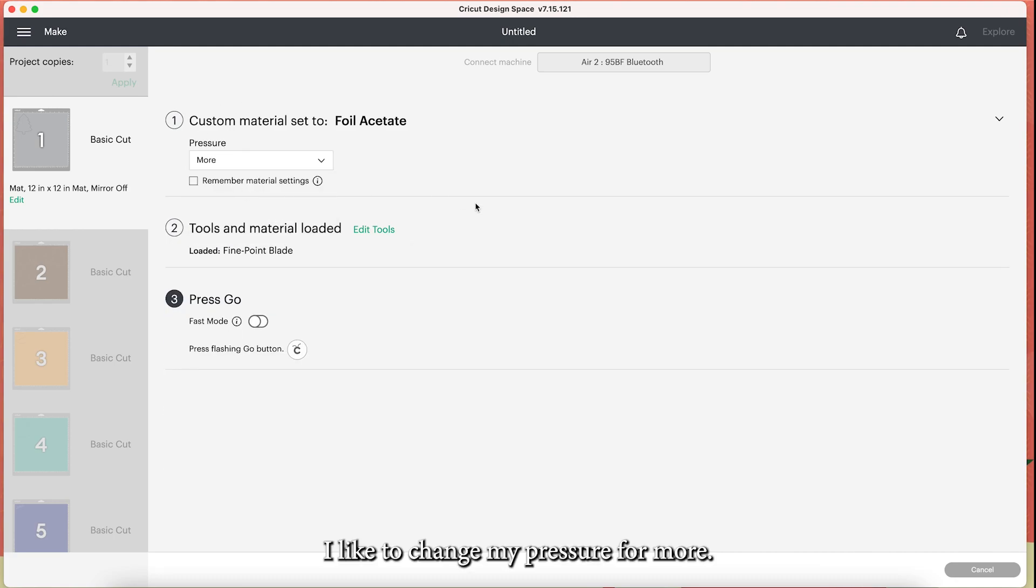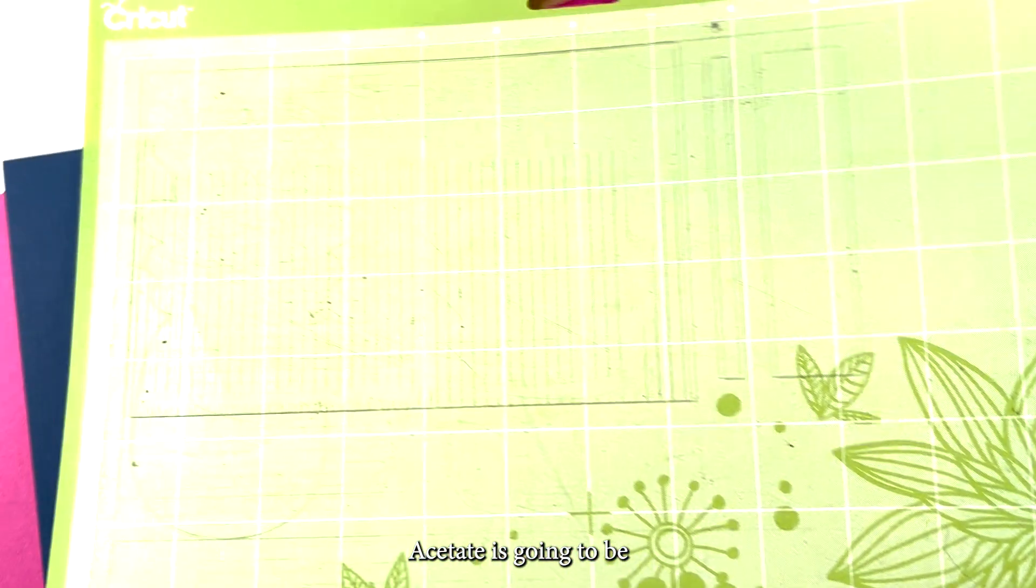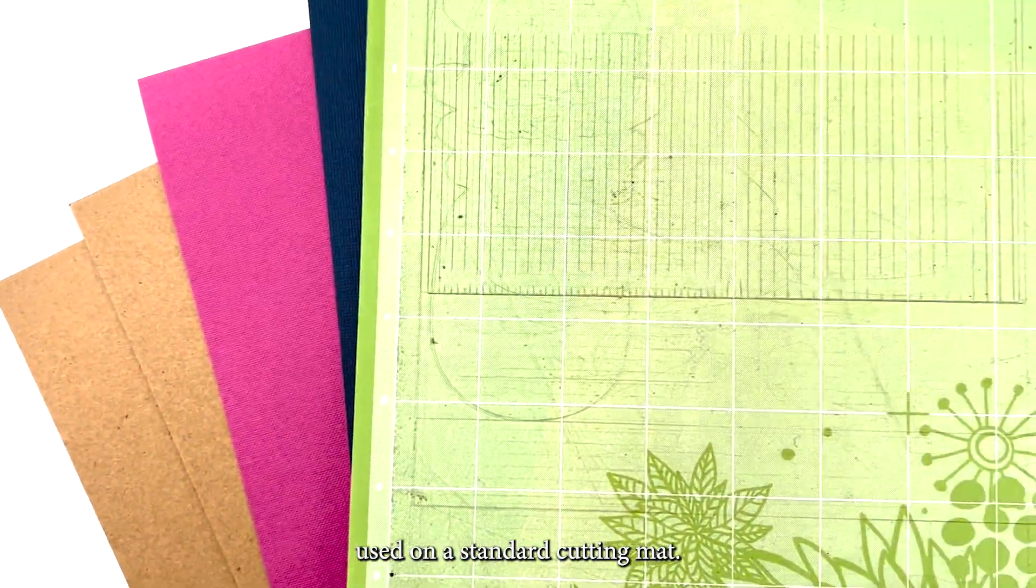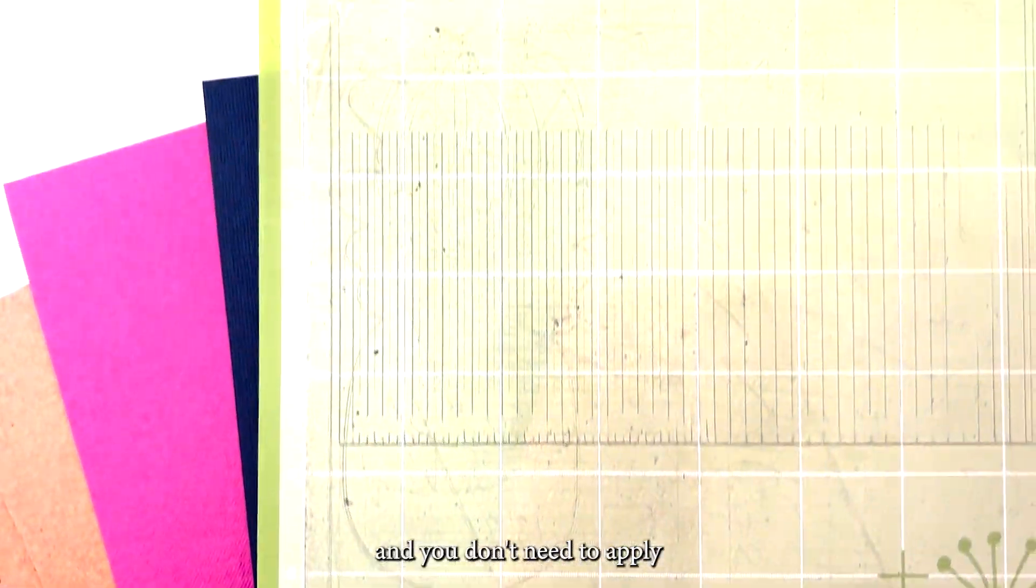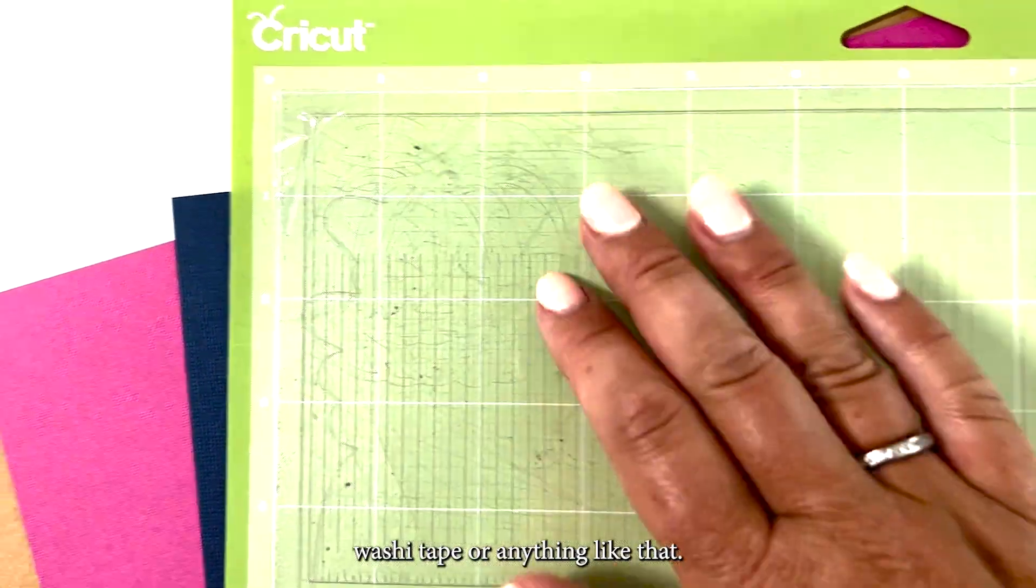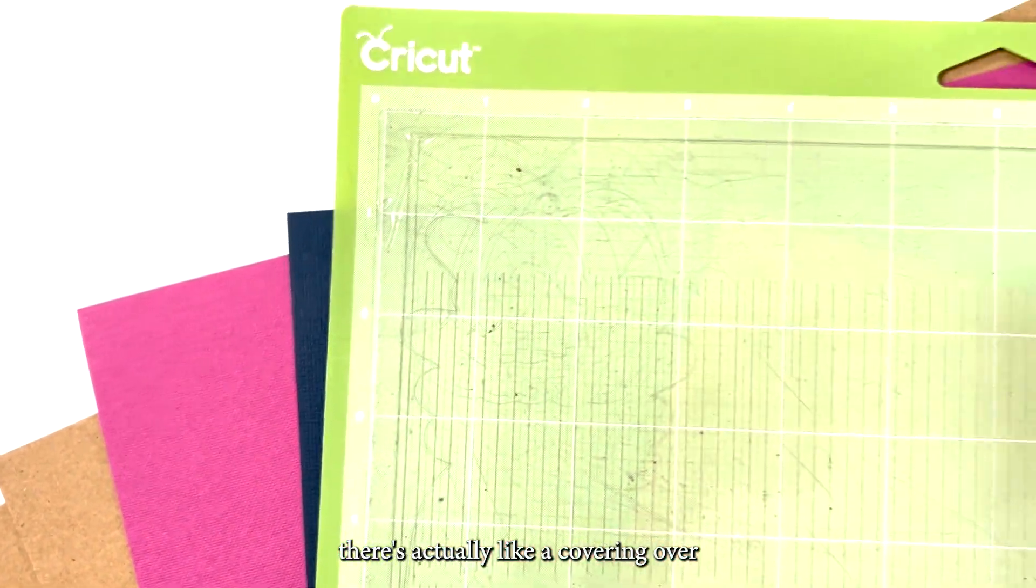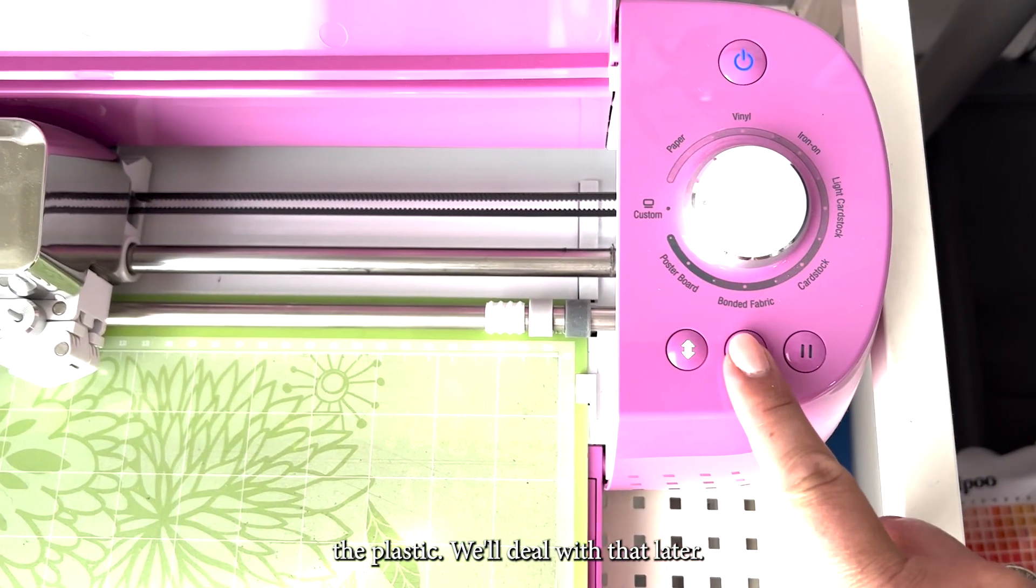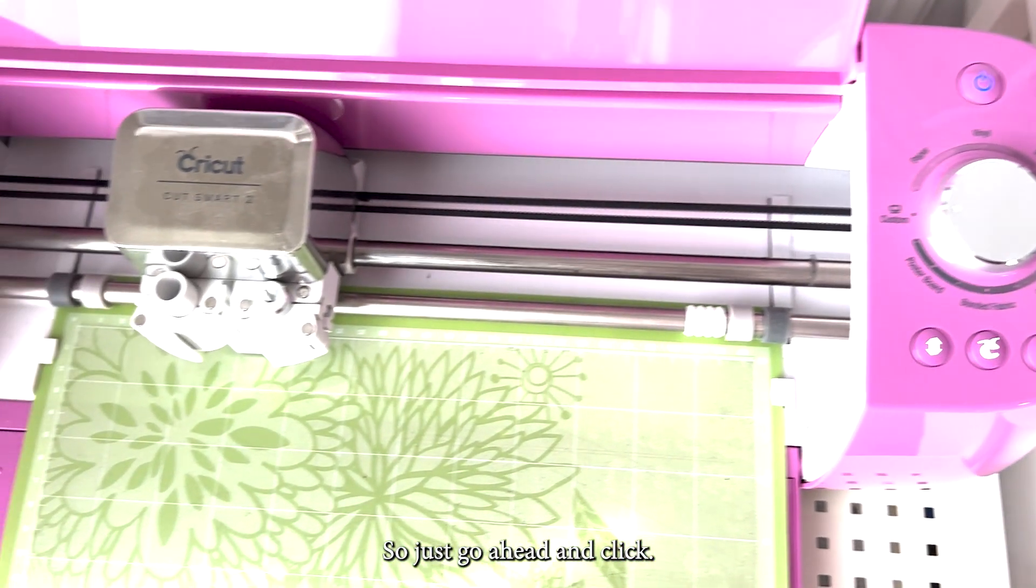I like to change my pressure for more. Acetate is going to be used on a standard cutting mat. Just go ahead and line it up and you don't need to apply washi tape or anything like that. You'll notice there's actually like a covering over the plastic. We'll deal with that later. So just go ahead and click go.